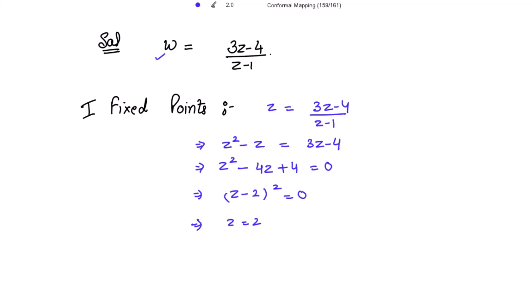Whenever we get only one fixed point, the transformation is parabolic. So z = 2 is the only fixed point and the transformation is parabolic.